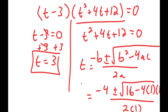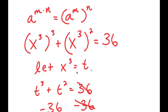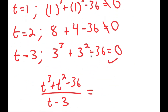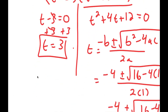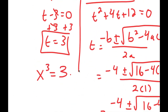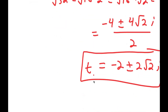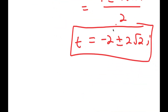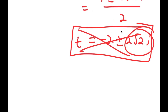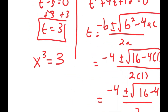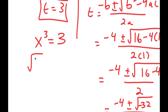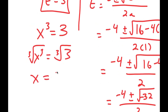We're not done yet, because remember we let x to the power of 3 equal t. So x to the power of 3 equals 3, and x to the power of 3 also equals the complex values. However, we can't have x to a power equal an imaginary solution, so we cannot use the complex solutions. The only valid solution is x to the power of 3 equals 3, and taking the cube root on both sides gives x equals the cube root of 3.